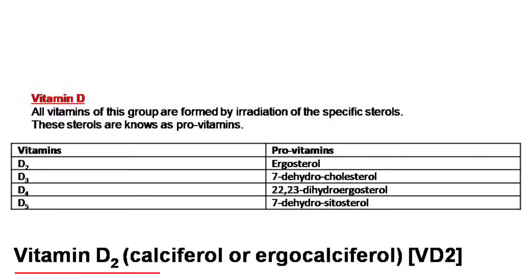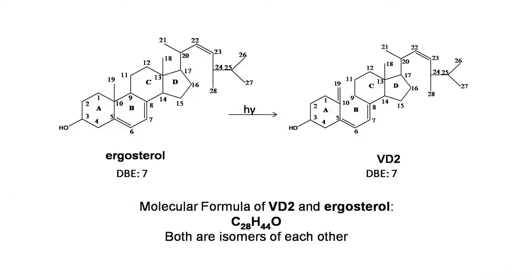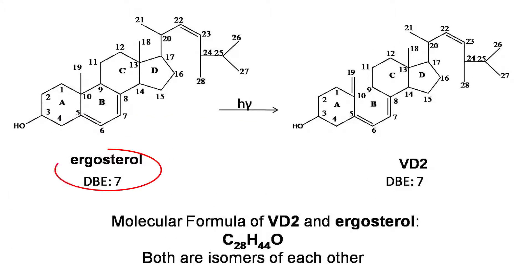Vitamin D2, calciferol or ergocalciferol, here we name it as VD2. Ergosterol has a double bond equivalent of seven. Vitamin D2 has a double bond equivalent of seven. Molecular formula of vitamin D2 and ergosterol is C28H44O. Both are isomers of each other.